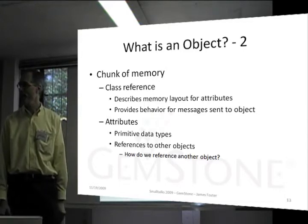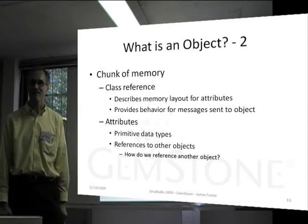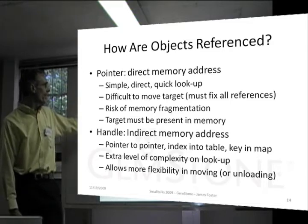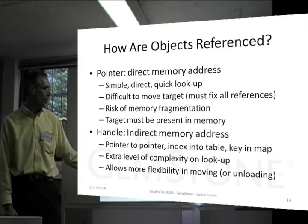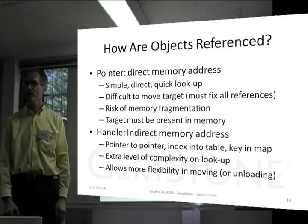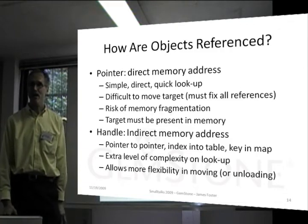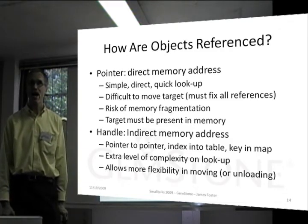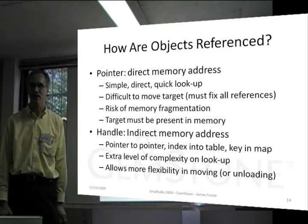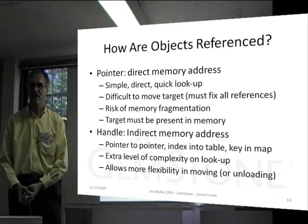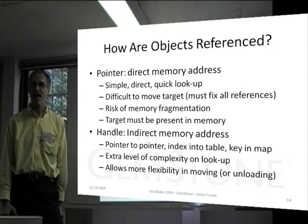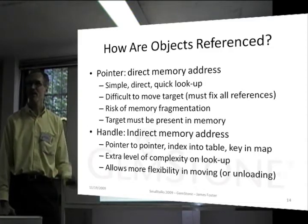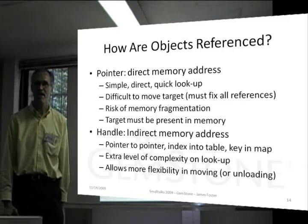How do we reference another object? There are a couple of ways of doing it, and different Smalltalks handle it differently. First, there's a pointer — an address of a chunk of memory. An object reference can simply be the location in memory of the object. It's simple, it's direct, it's quick to look up, but it's difficult to move the target, because you have to fix all the references. If the object moves, then all the pointers have to be updated.